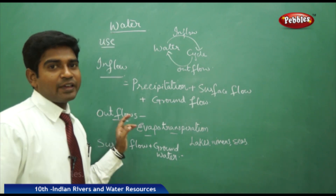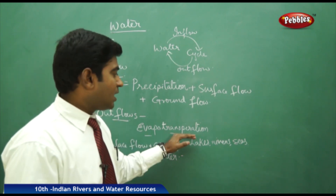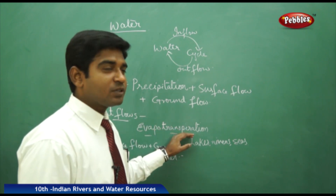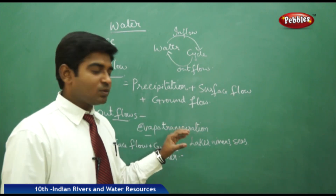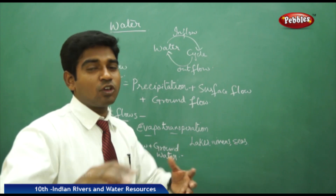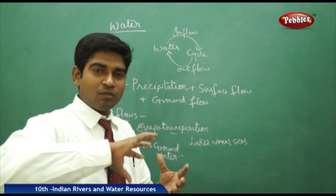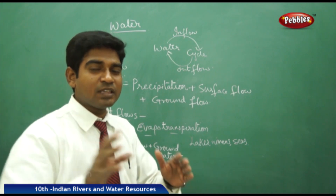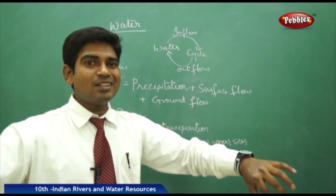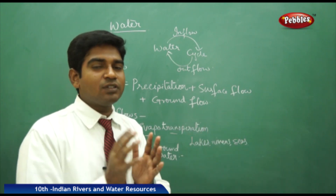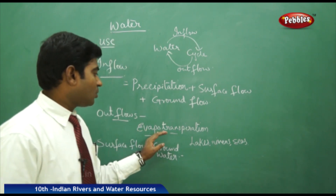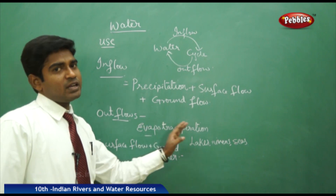Outflow has two parts: evaporation and transpiration. When evaporation and transpiration happen together, it is called evapotranspiration. Evaporation happens directly from lakes, rivers, and seas. When water is being transported in rivers moving from one place to another, it gets diverted, the quantity of water decreases, and it moves to other places. Because of that, water content reaching various areas also goes down. This is evapotranspiration — evaporation and transportation combined.